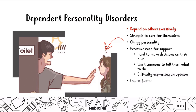They have difficulty expressing their own opinion and have very low self-esteem, simply because they don't believe they can make the right decisions. These patients often get stuck in abusive relationships — a hallmark feature. A lot of times these people are dependent on their partner even though they're getting abused. They know they're being abused, but they stay because they don't feel like they can survive, be successful, or live properly on their own. And hence, they get stuck in those abusive relationships.